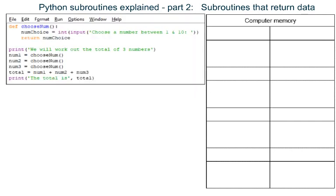In this final program there is one subroutine inside which the user chooses one integer. Each time the subroutine is used it returns the integer that the user has chosen, so that this integer can be used somewhere else in the program. The subroutine is called three times, and each time the value returned is stored in a different variable. The values in these three variables are then added together, stored, and the total is output.